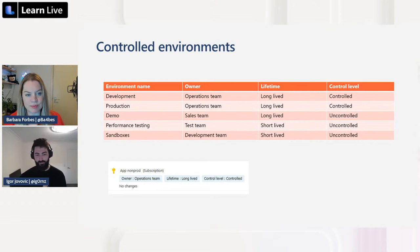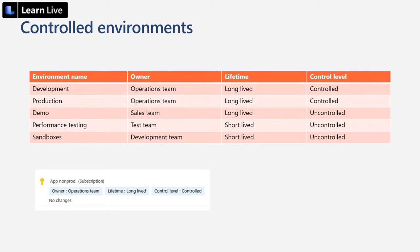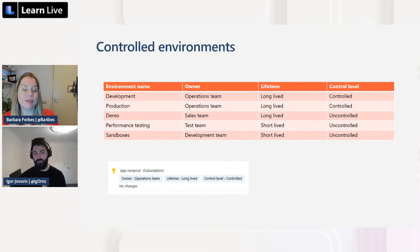Tags are a great resource for identifying subscriptions by purpose, control level, and lifespan. They're underrated but incredibly useful. A new team member can find information about resources directly from the tags. There are more and more features being integrated with tags, including cost management capabilities.